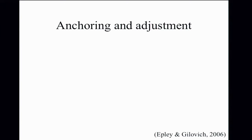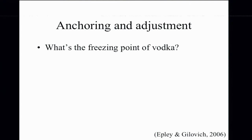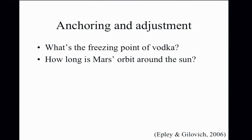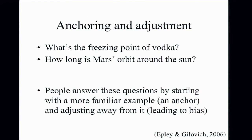The second example concerns how people make judgments of quantities — the anchoring and adjustment phenomenon. Think about: what's the freezing point of vodka in degrees Fahrenheit? And how long is Mars's orbit around the sun? The freezing point of vodka is minus 17 degrees Fahrenheit — most people overestimate that. Mars's orbit is 687 days — most people underestimate. The idea is you start with a familiar example as an anchor — the freezing point of water or Earth's orbit — and then fail to adjust sufficiently away from it.